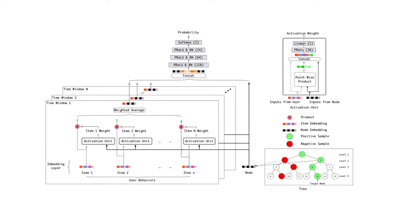Based on this formulation, we train the tree model with an attention network, where positive samples are nodes in the target path and the negative samples are randomly sampled from each level of the tree.